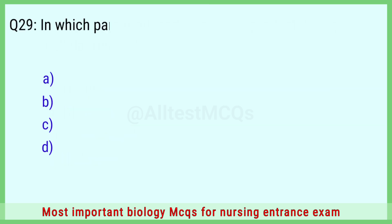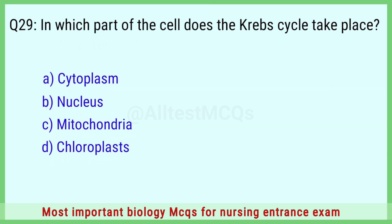Question number 29: In which part of the cell does the Krebs cycle take place? The right answer is option C: mitochondria.